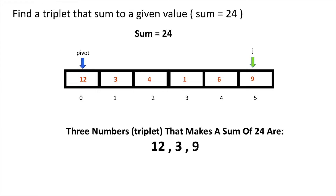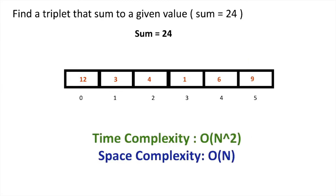We have optimized our problem from O(n³) to O(n²) by using an additional data structure — a hash set. The total time complexity of finding the triplet sum is O(n²), and since we used an additional data structure, the space complexity is O(n). Let's proceed with the Java implementation so it will be easy to understand and implement the algorithm.